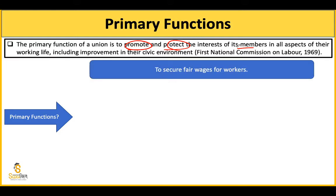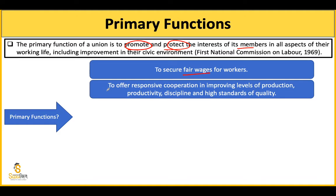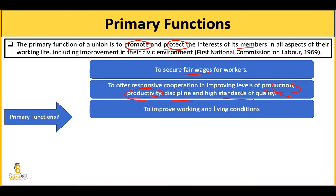Primary functions के कुछ examples: सबसे पहले, to secure fair wages - workers को fair wages मिलनी चाहिए, काम के हिसाब से wage मिलनी चाहिए। Second, to offer responsive cooperation in improving level of production, productivity, discipline, and high standards of quality। अगर एक labor की production zero है, productivity zero है, discipline नहीं है, और inferior quality produce कर रहा है, तो union employer से जाकर ज़्यादा salary नहीं माँग सकती। तो primary function यह भी है कि worker की productivity और discipline को भी improve करें।